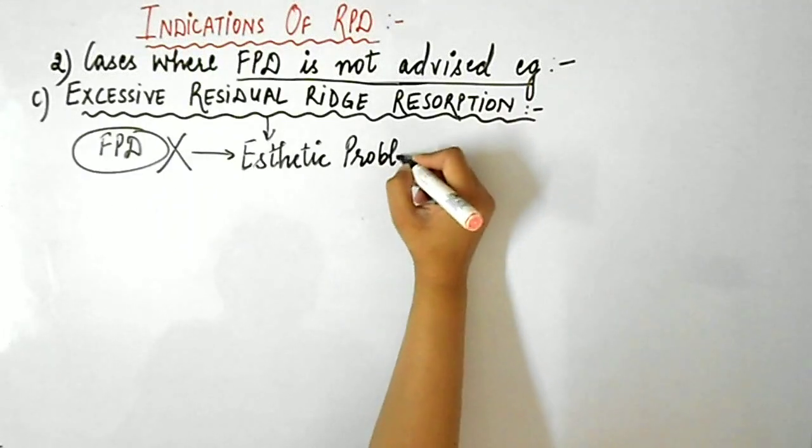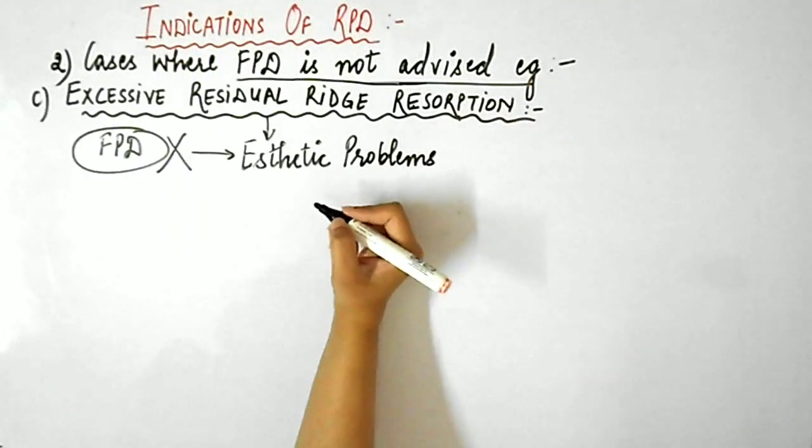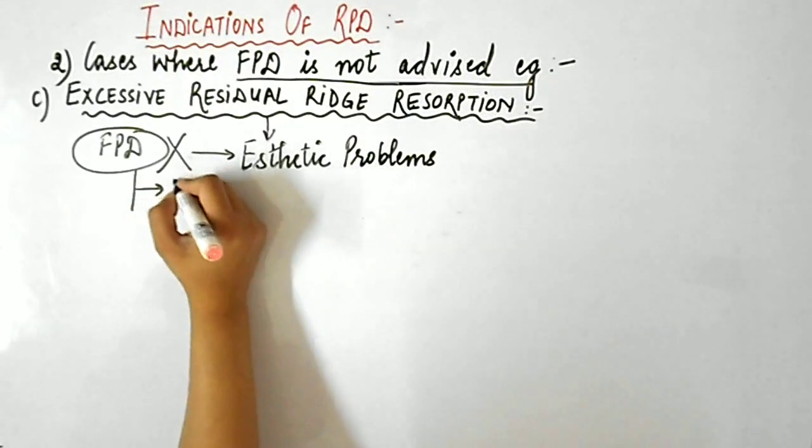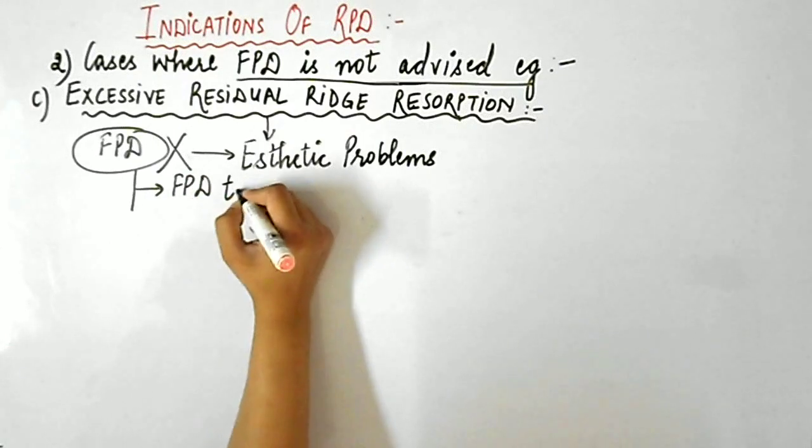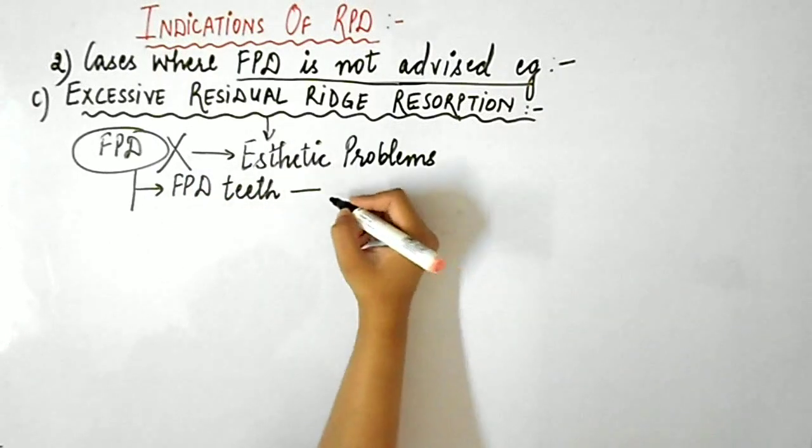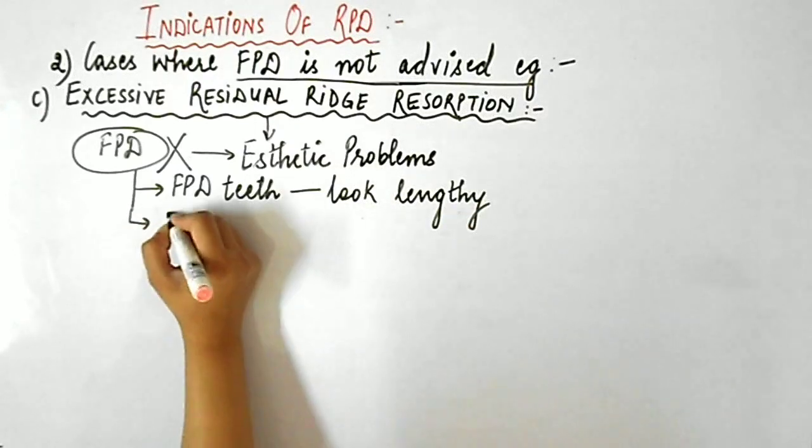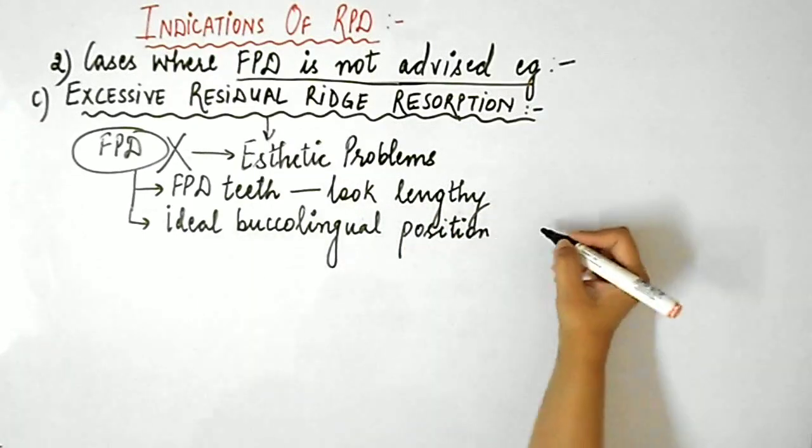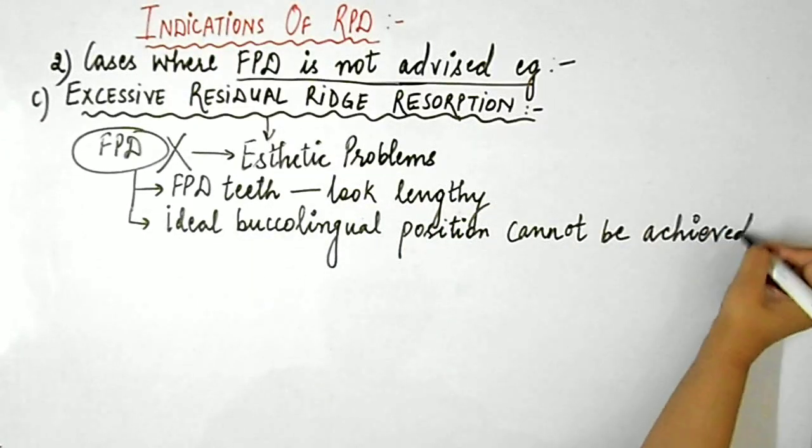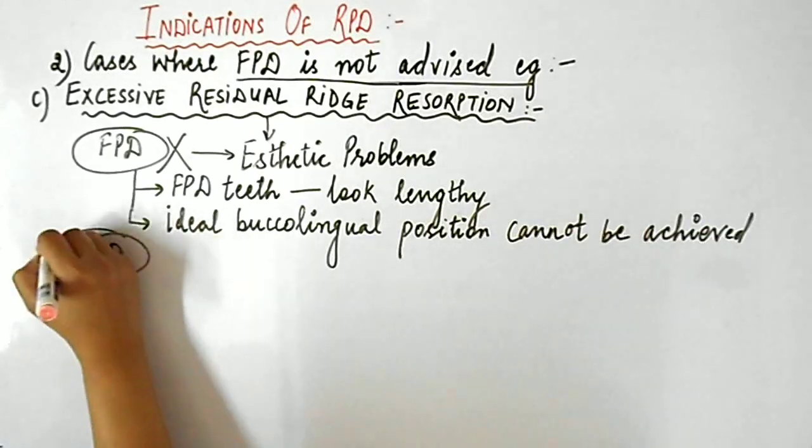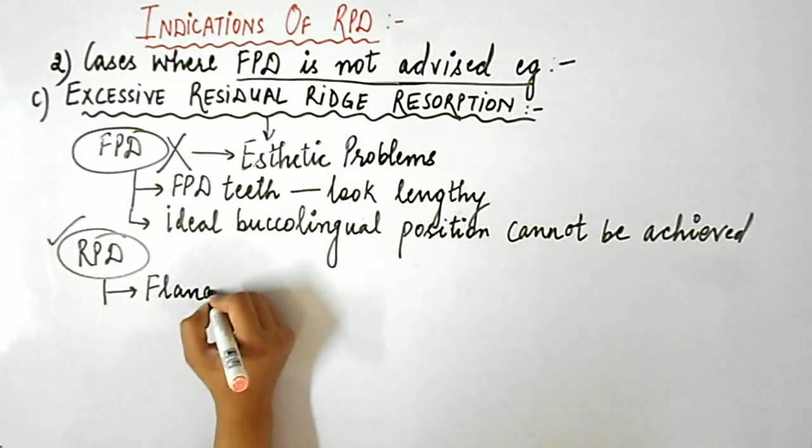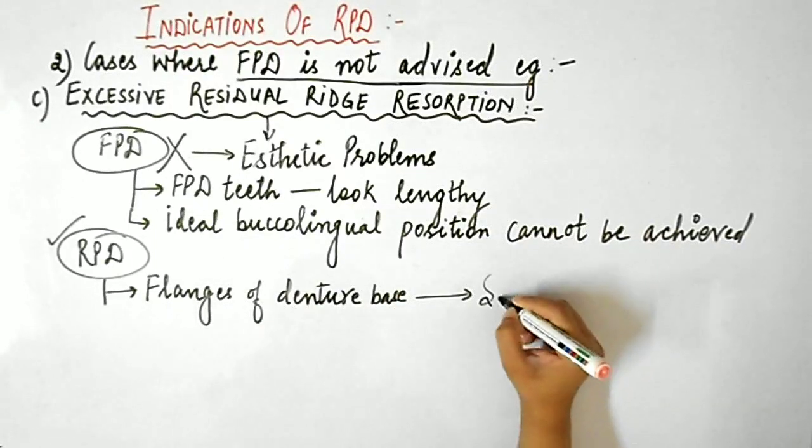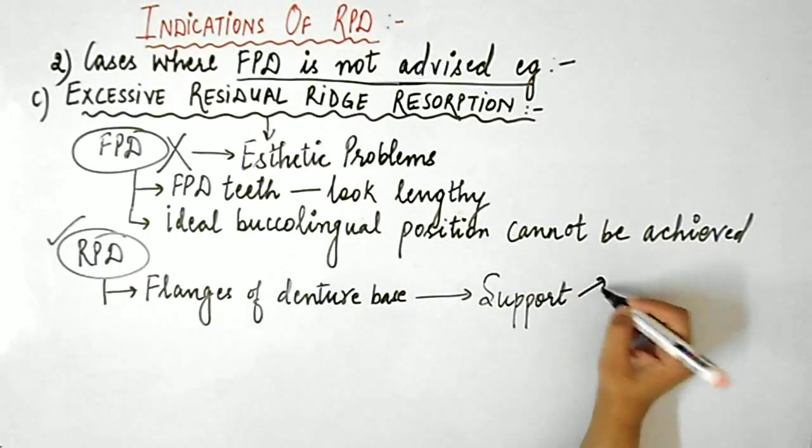Next clinical situation where FPD is not advised is excessive residual ridge resorption. FPD is not advisable in such cases because excessive residual ridge resorption results in aesthetic problems. Fixed partial denture teeth may look very lengthy and even ideal buccolingual position cannot be achieved. Hence, RPD is indicated in such cases. The flanges of the denture base of RPD provide greater support to cheek and lips and help establish normal facial contours.